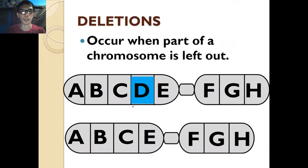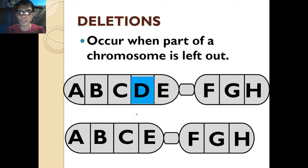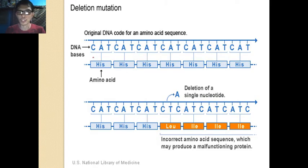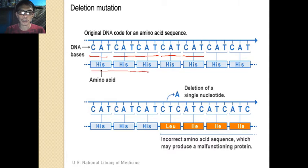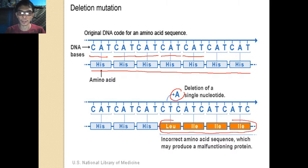Now let's look at the different types of gene mutation. The first type is deletion. As you can see in the diagram, there is a part of the chromosome that is deleted — in this case, letter D is deleted. At the DNA sequence level, if you delete one single nucleotide from a sequence, from histidine, the whole sequence will totally change to produce a different amino acid. If this sequence is involved in the formation of a body part, the effect on the organism will be drastic.